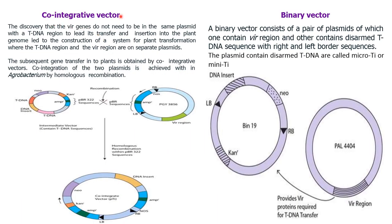In the co-integrative vector system, the discovery that the vir genes do not need to be on the same plasmid as the T-DNA region to lead to its transfer and insertion into the plant genome led to the construction of a system for plant transformation where the T-DNA region and vir region are on separate plasmids. Gene transfer into the plant is obtained by co-integrative vector; co-integration of the two plasmids is achieved by homologous recombination.